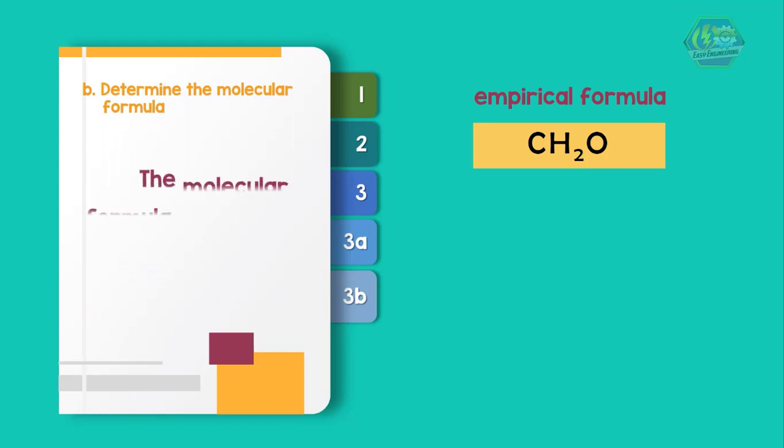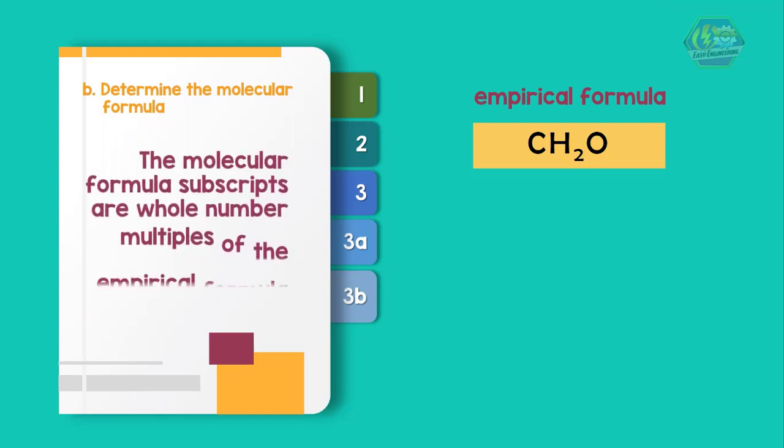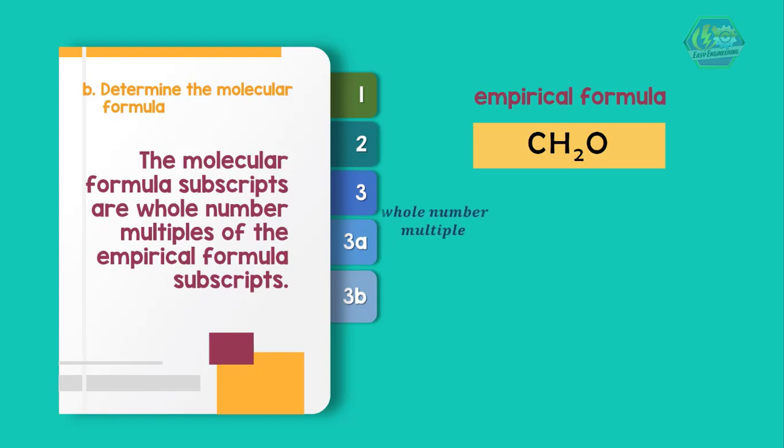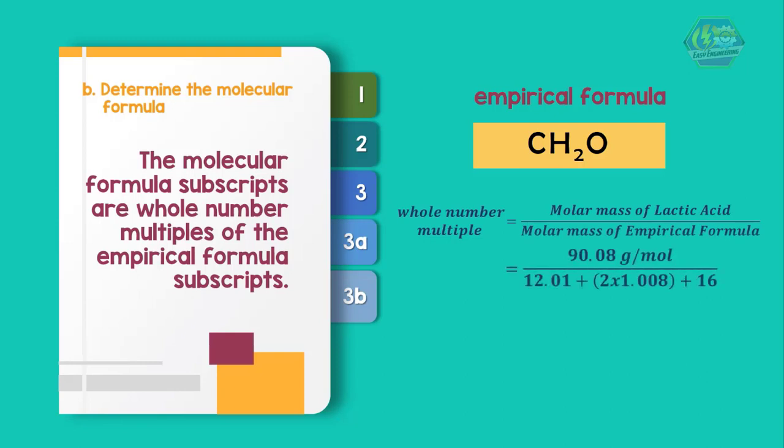The molecular formula subscripts are whole number multiples of the empirical formula subscripts. To find this multiple, we divide the given molar mass by the empirical formula mass, which we find from the sum of the elements' molar masses. The empirical formula mass is 30.03 grams per mole.